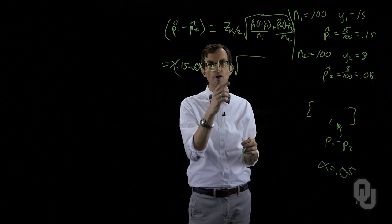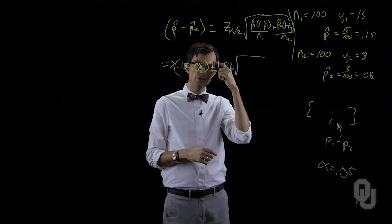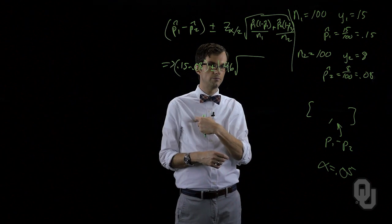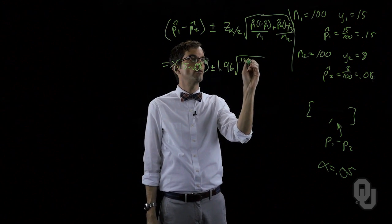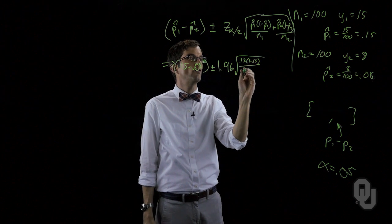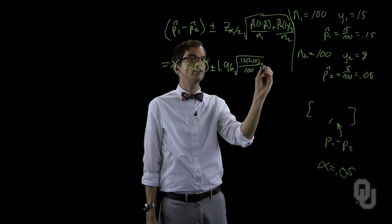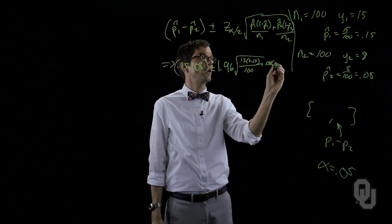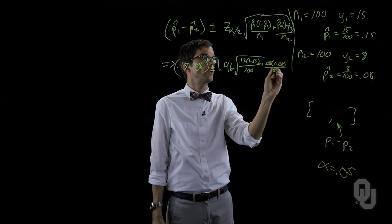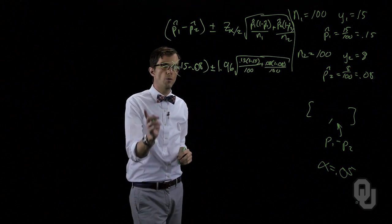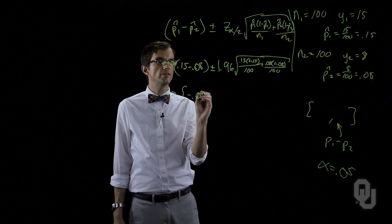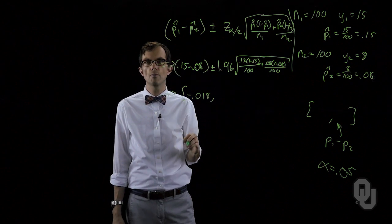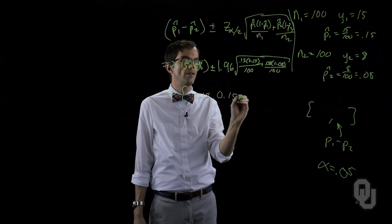It's not just here, it's also here. One point nine six. We've got point one five, one minus point one five over one hundred plus point oh eight, one minus point oh eight over one hundred. If we work this out we should get a lower bound of negative point zero one eight and an upper bound of point one five eight.